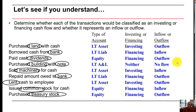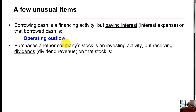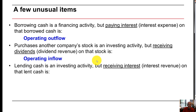Please review these transactions carefully — they are key to understanding the investing and financing sections. A few unusual items: borrowing cash is a financing activity, but paying interest expense on that borrowed cash is an operating outflow. Purchasing another company's stock is an investing activity, but receiving dividend revenue on that stock as an investment is an operating inflow. Lending cash is an investing activity, but receiving interest revenue on that lent cash is an operating inflow.